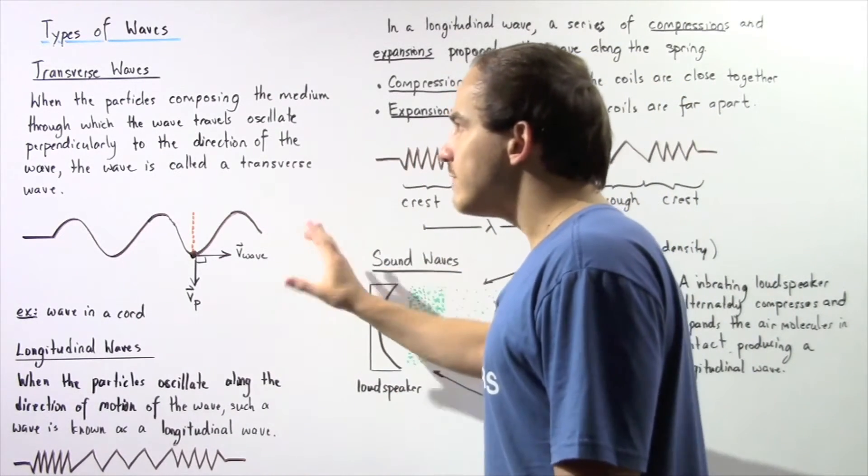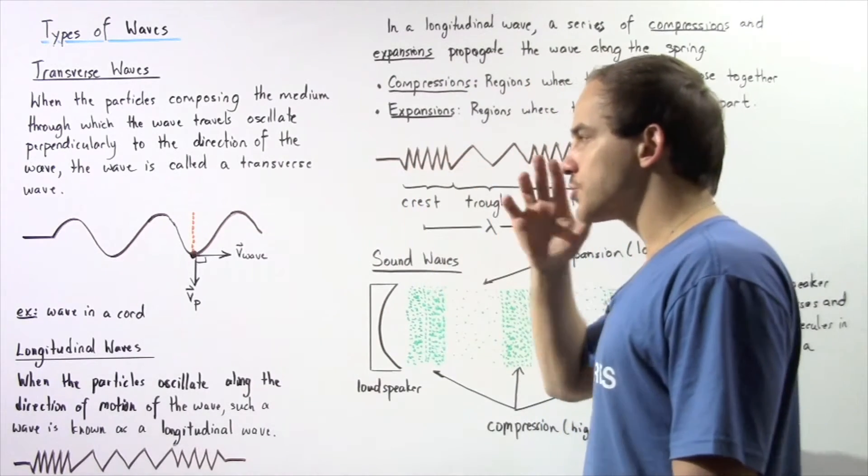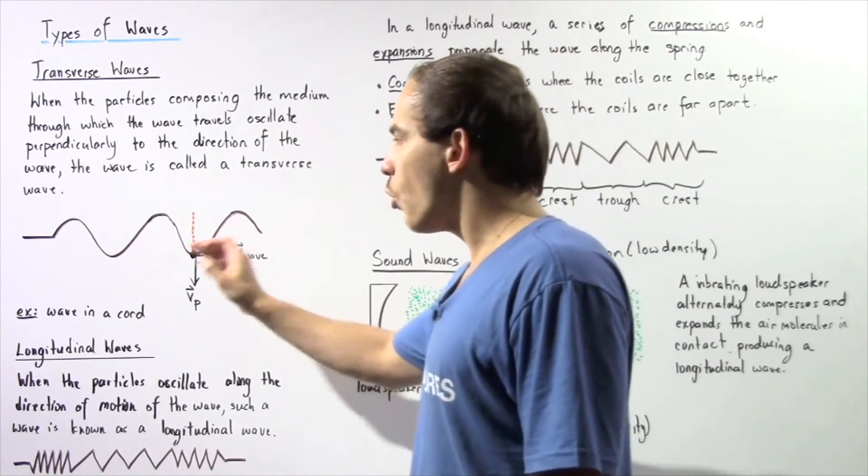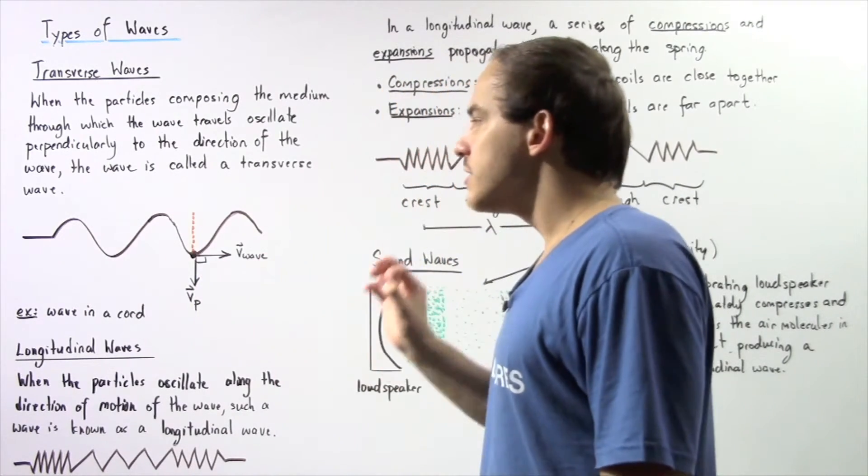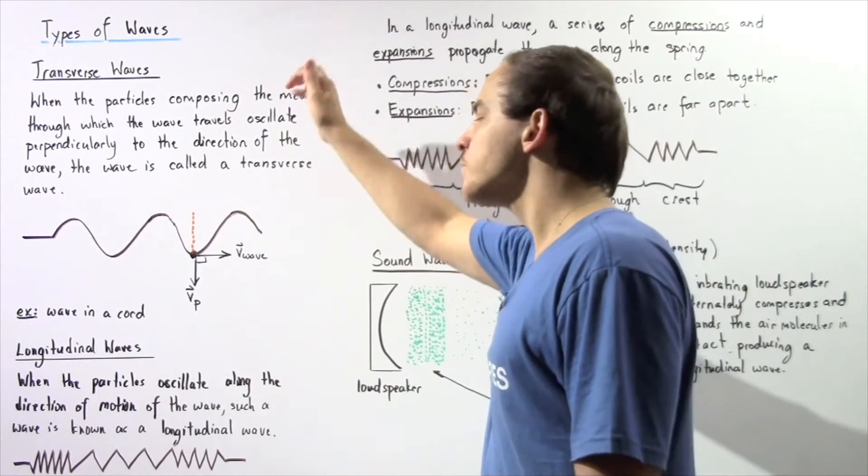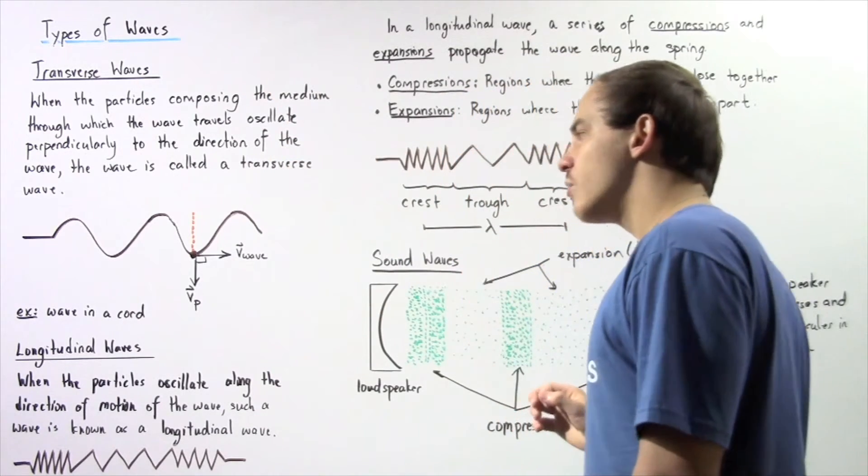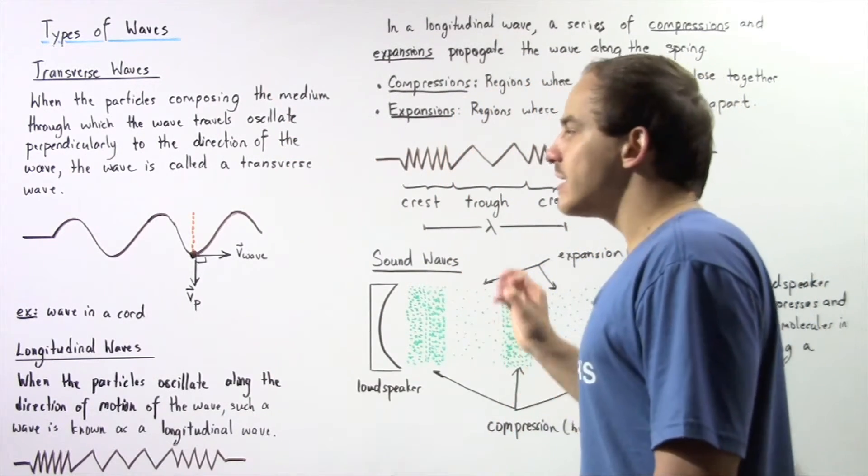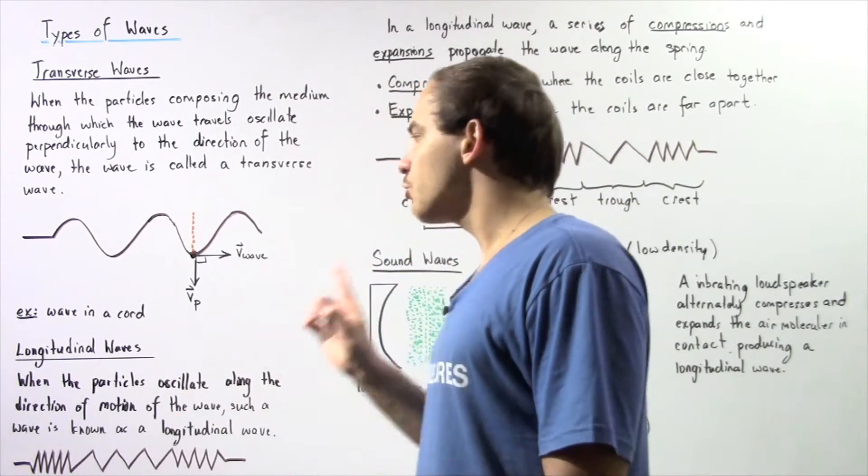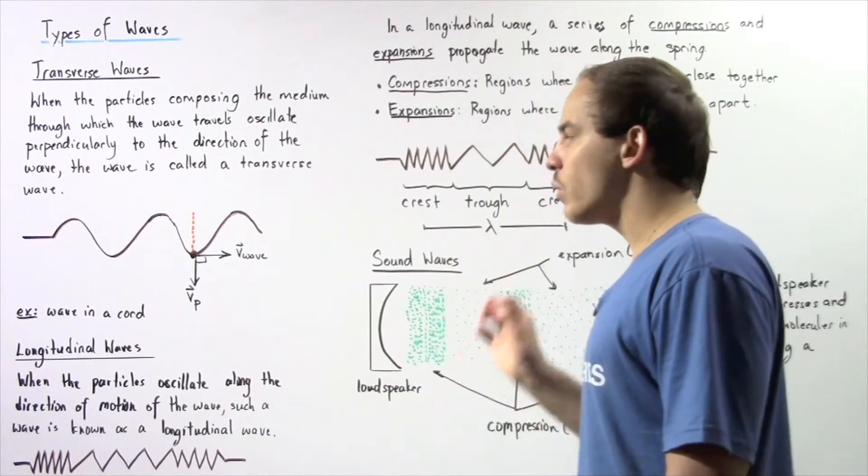Now this wave is an example of a transverse wave because if we take any single point along the chord, the velocity of the particle at that point will either point upward or downward along the y-axis. And that direction will be perpendicular to the direction of the motion of our wave.